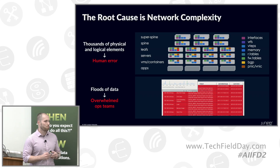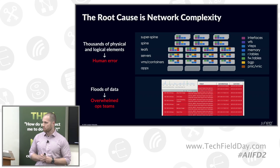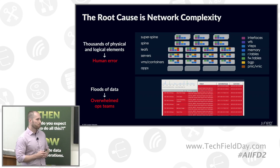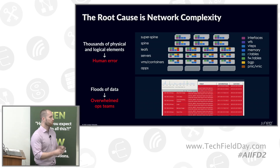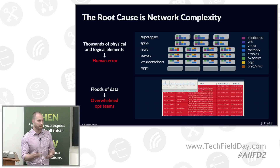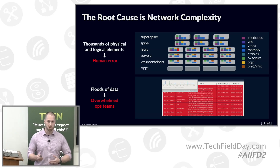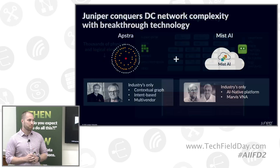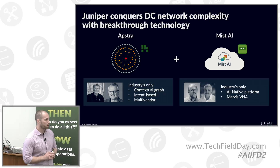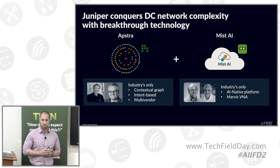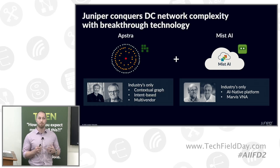The problem with most network management tools out there is they flood you with data, which is nice, but then you're looking for the needle in the haystack. You're just looking through all these data points trying to figure out what means what. That's what we've done differently at Juniper — we've brought our technology together to build something different and better.